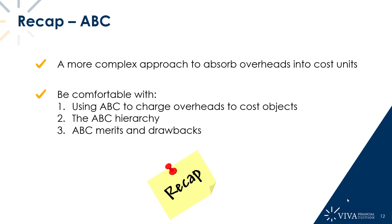So what do we need to be comfortable with? We need to be comfortable with the mechanics of activity-based costing — how we go through the process of taking our overheads, assigning them to activities, calculating cost driver rates, and then charging them to our cost objects such as products or customers. We also should be comfortable with the ABC hierarchy — how we classify different activities as unit level, batch level, product sustaining, or facility sustaining. And we need to be comfortable with the merits and drawbacks of ABC: theoretically a much more superior process that gives great information for decision-making and cost control, but it brings added complexity, and the costs of maintaining this approach could be quite substantial.